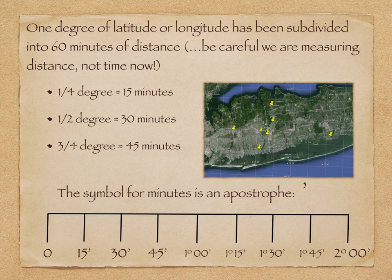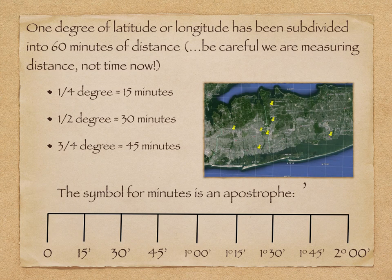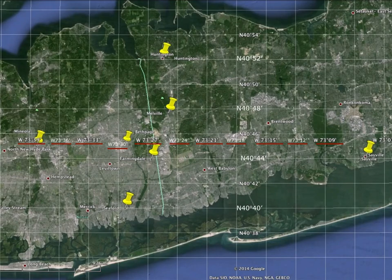If we go a quarter of the way between one degree and two degrees, that's one degree 15 minutes. If we're at the halfway point, that's one degree and 30 minutes. One degree 45 minutes is three quarters of the way to two, and here we are at the two degree zero minute mark to mean we're exactly at two degrees. So we're going to apply this to a Long Island map using Google Earth, and use this extra precision in finding our latitude and longitude.